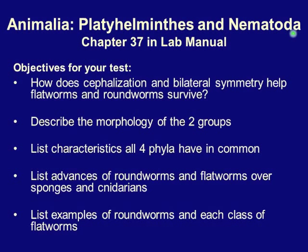Now let's move on to new phyla: Platyhelminthes and Nematoda — found on page 399 in your lab text. Test objectives include: How does cephalization and bilateral symmetry help flatworms and roundworms survive? Describe the morphology of the two groups. List characteristics all four phyla have in common. List advantages of roundworms and flatworms over sponges and cnidarians. And list examples of roundworms and each class of flatworms.